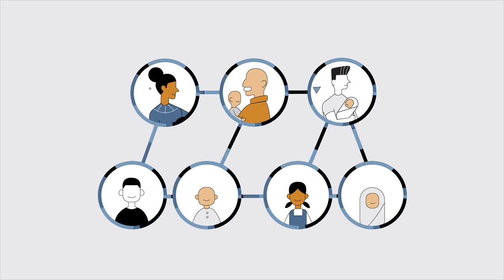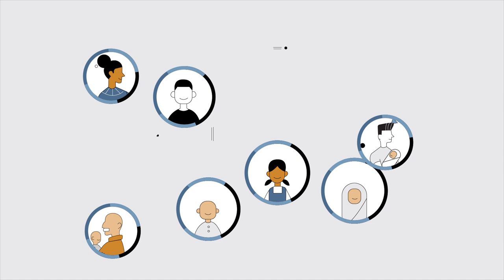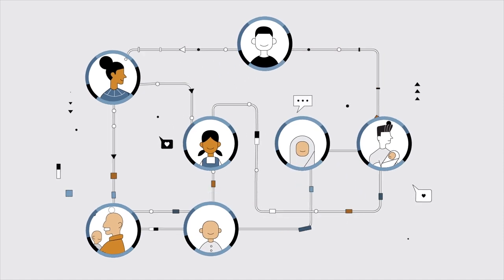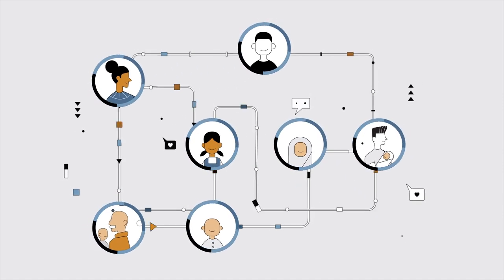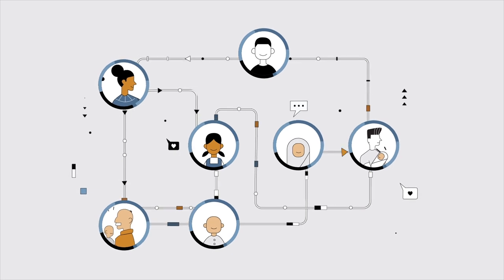In fact, having stable responsive relationships with committed adults is the single most common factor in children who develop the capacity to overcome serious hardship in life.